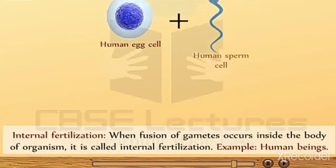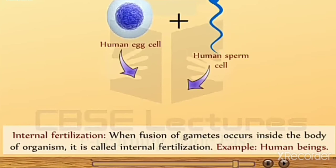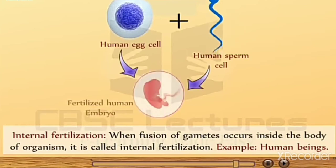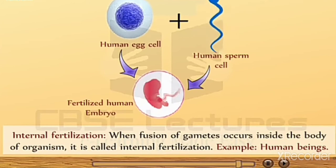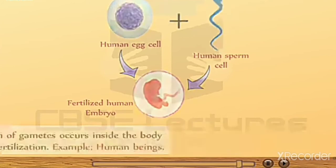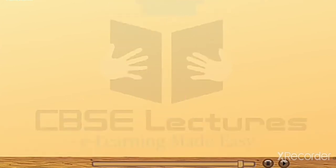Internal fertilization is when the fusion of gametes occurs inside the body of an organism. It is called internal fertilization. An example is human beings.